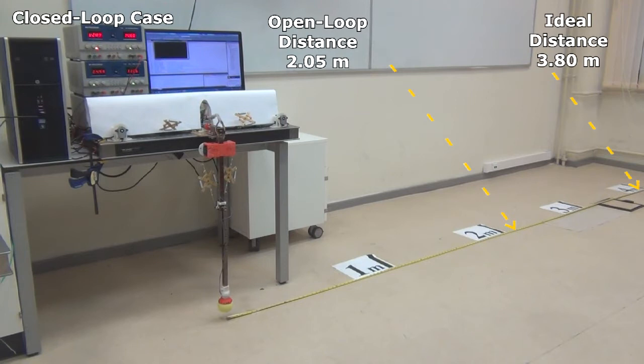When we follow the reference trajectories with nonlinear model predictive control in closed-loop, the distance increases to 3.22 meters.